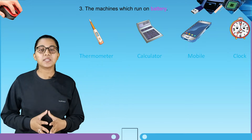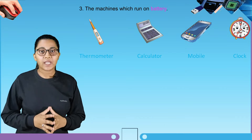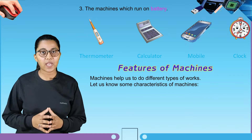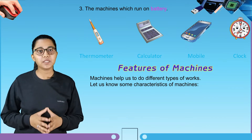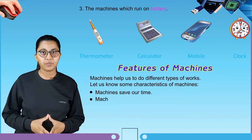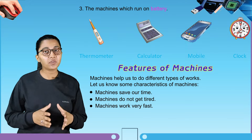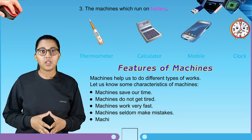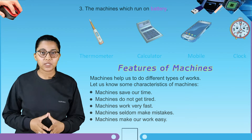Our next topic is features of machines. Machines help us to do different types of work. The characteristics of machines are: machines save our time, machines do not get tired, machines work very fast, machines seldom make mistakes, and machines make our work easy.